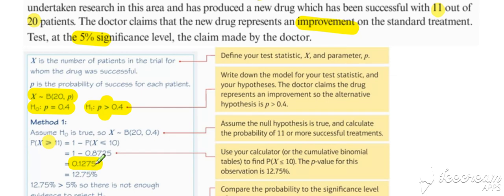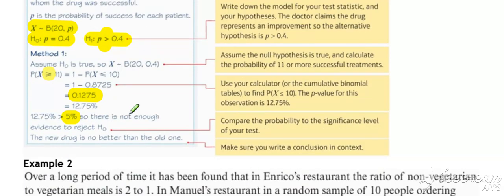Then we compare our probability with the significance level of the test. In this case, a one-tailed test, so we're comparing our probability with 0.05. Our probability is reasonably large, not significantly small, not small enough to cause us to reject the null hypothesis. So we accept H0 and conclude that there's not enough evidence to suggest the new drug is any better than the old one.